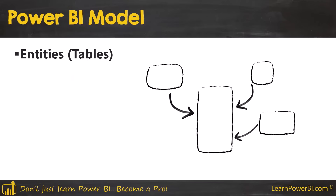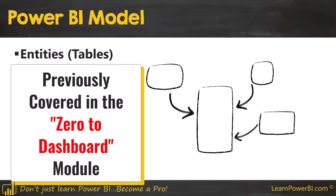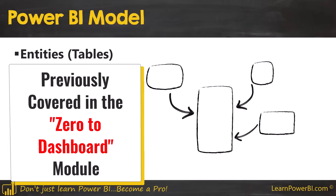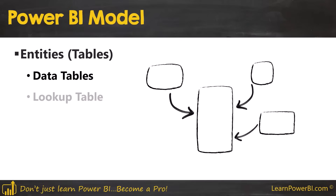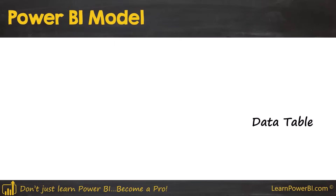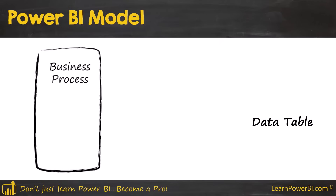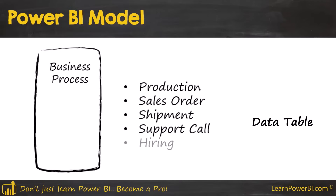So entities as tables can be of two types. We can have data tables or we can have lookup tables. Now data tables typically represent your business process. They capture data about a specific business process, and it could be anything — it could be something related to your production, sales order, a shipment, a support call, a hiring, or any other process in your business.